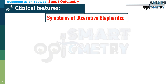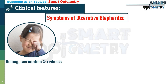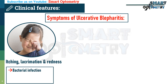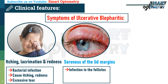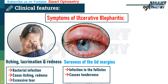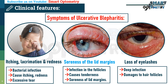Symptoms of ulcerative blepharitis include itching, lacrimation, and redness — bacterial infection and inflammation cause itching, redness, and stimulate excessive tear production. Soreness of the lid margins occurs as infection in the follicles and glands causes tenderness along the margins. Loss of eyelashes results from deep infection damaging the hair follicles, leading to the fall of eyelashes.